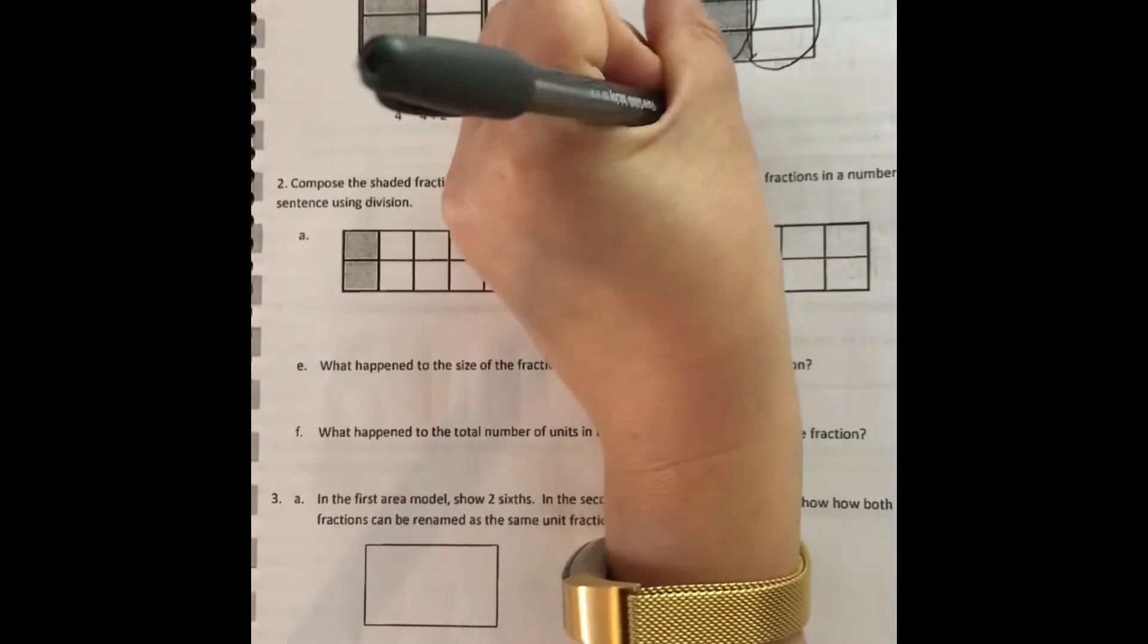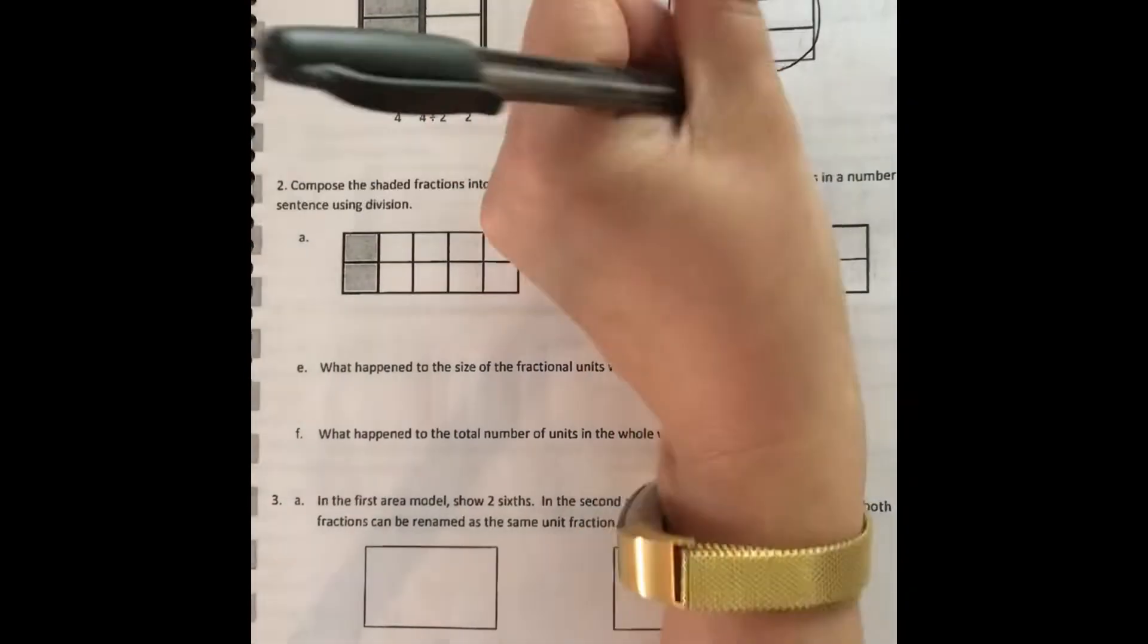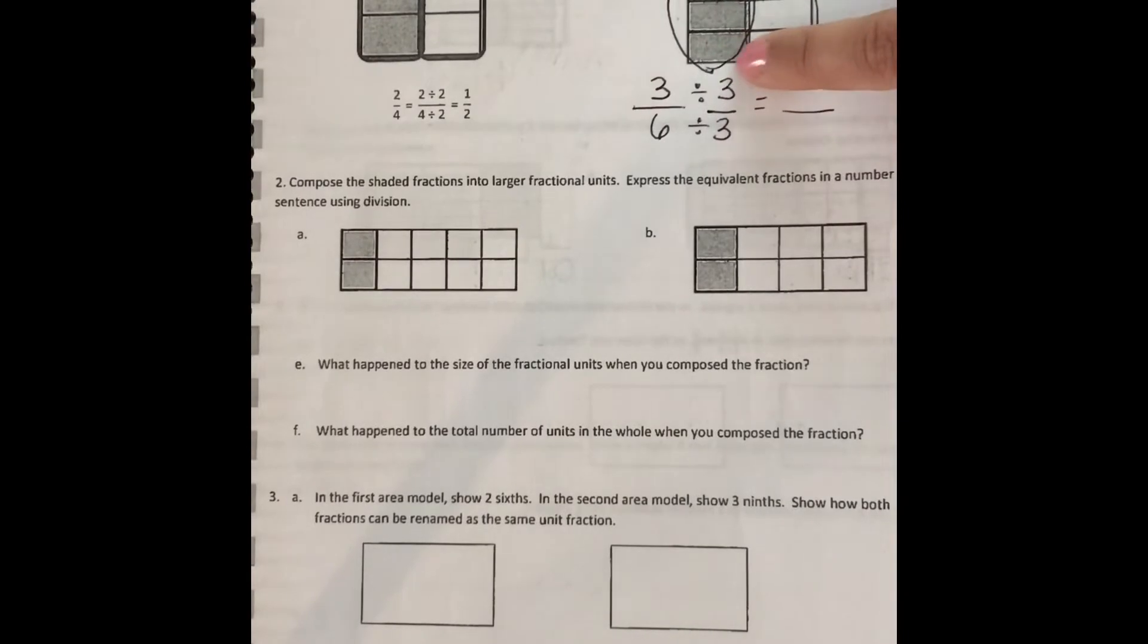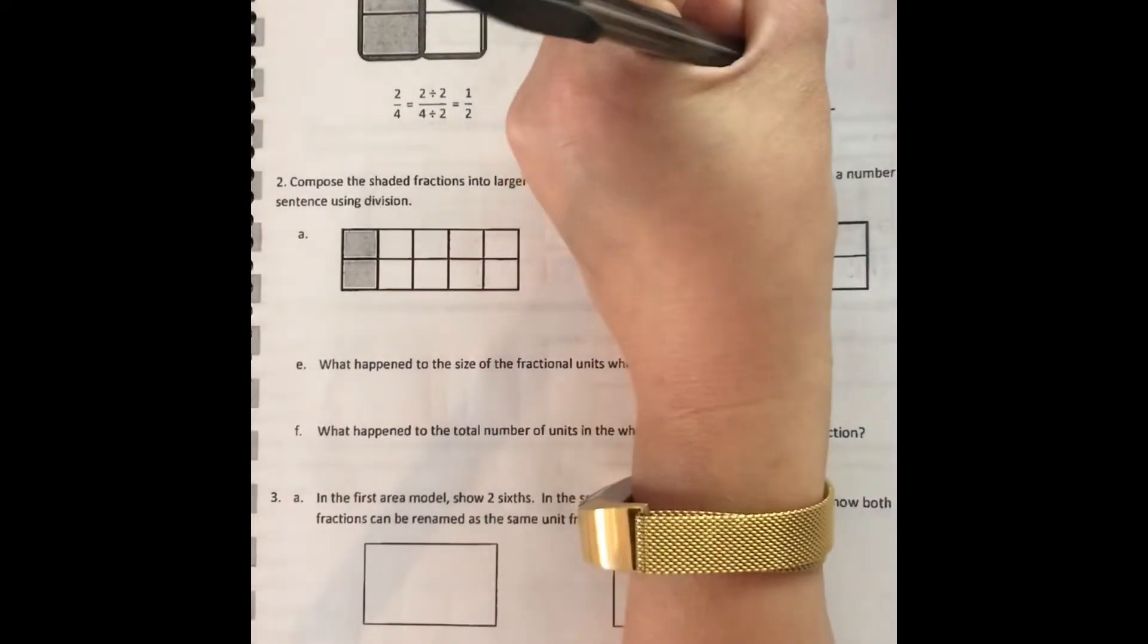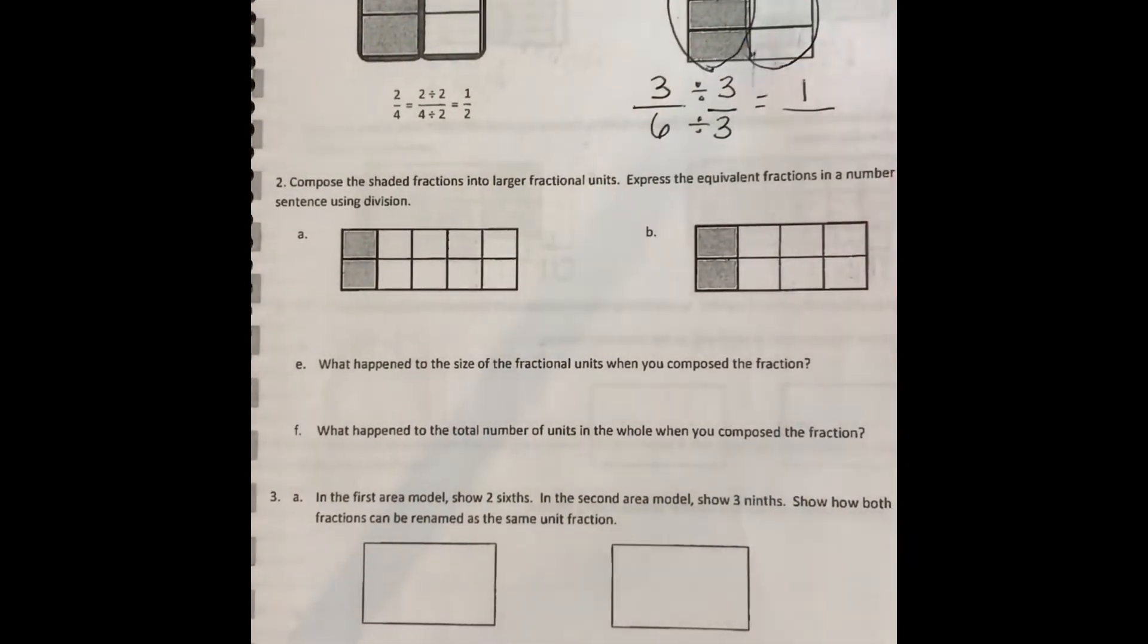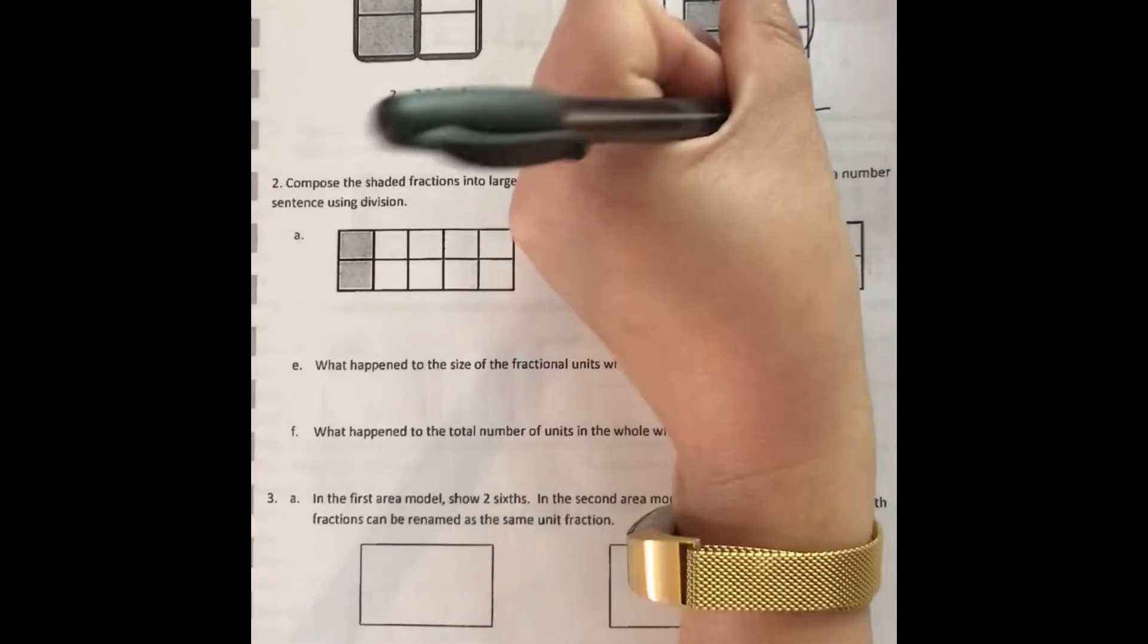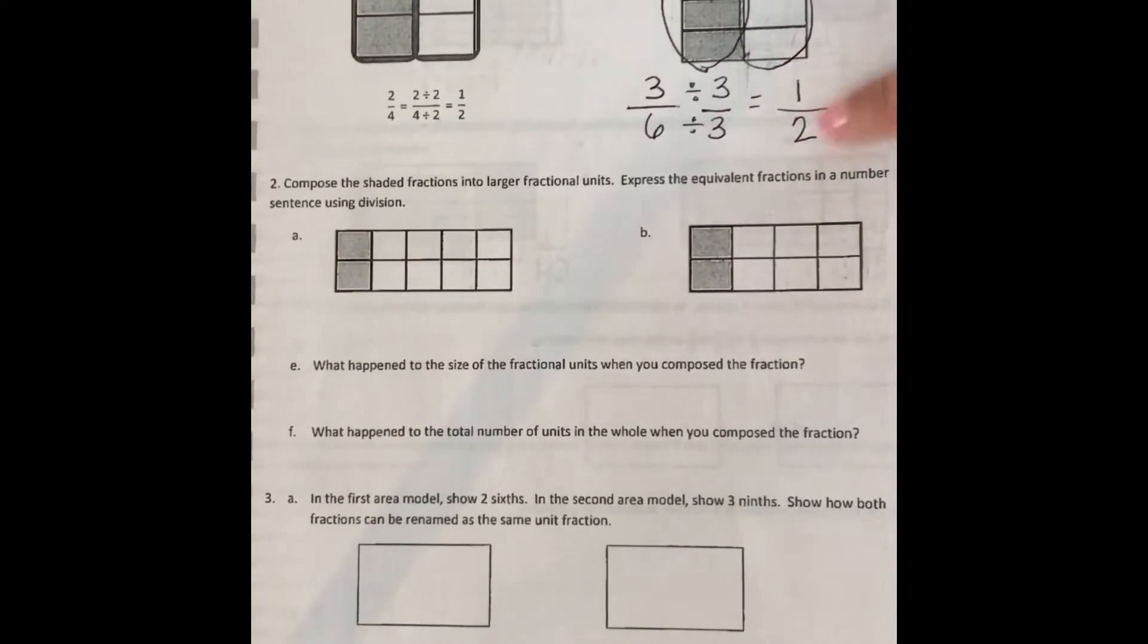Whatever we did to the top we're going to do to the bottom. So how many are shaded? How many groups of three are shaded? Here's one group where all of them are shaded. So that's one. And how many groups out of the whole six are shaded? One, two. So three sixths is equivalent to one half.